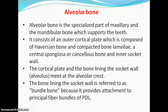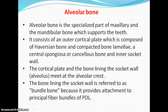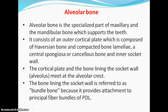The alveolar bone is the specialized part of maxillary and mandibular bone which supports the teeth. The cell lines involved in remodeling of alveolar bone include pre-osteoblasts, osteoblasts, osteocytes, bone lining cells, and osteoclasts. The alveolar bone consists of an outer cortical plate composed of haversian bone and compacted bone lamellae, a central spongiosa or cancellous bone, and the inner socket wall. The cortical plate and the bone lining the socket wall meet at the alveolar crest.